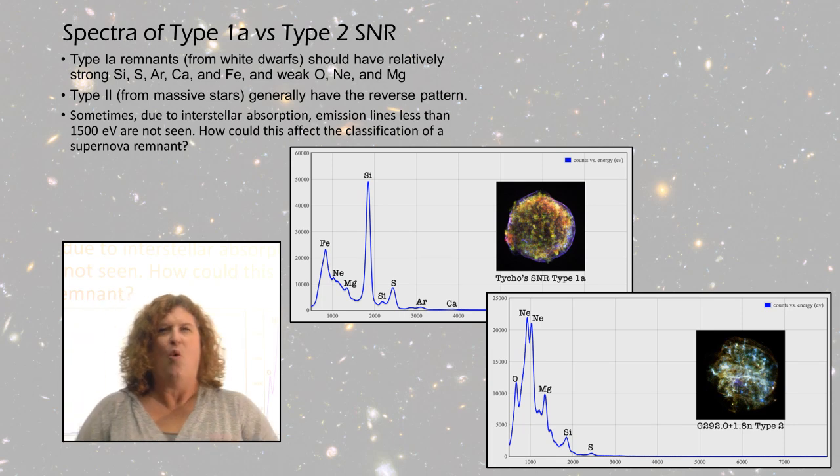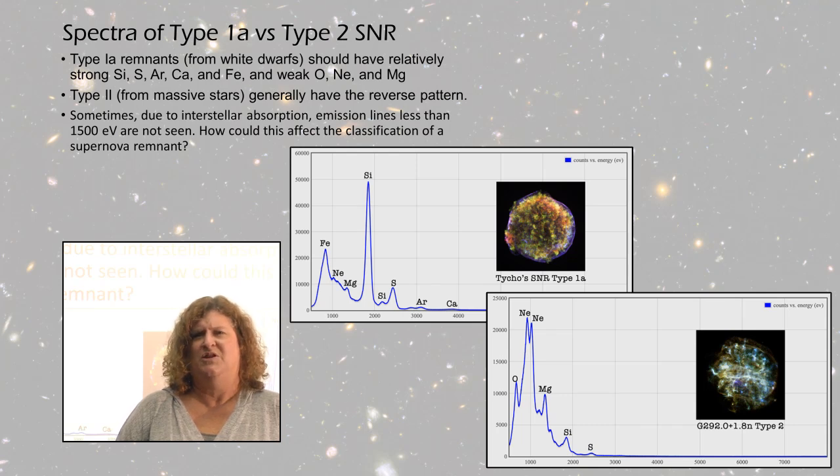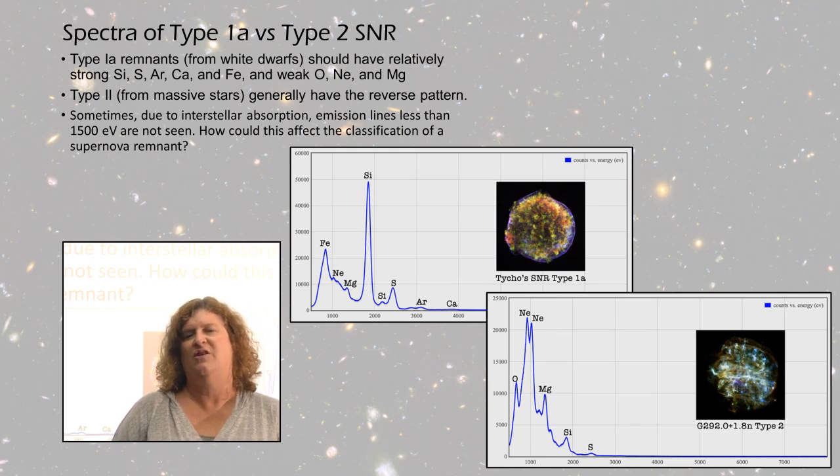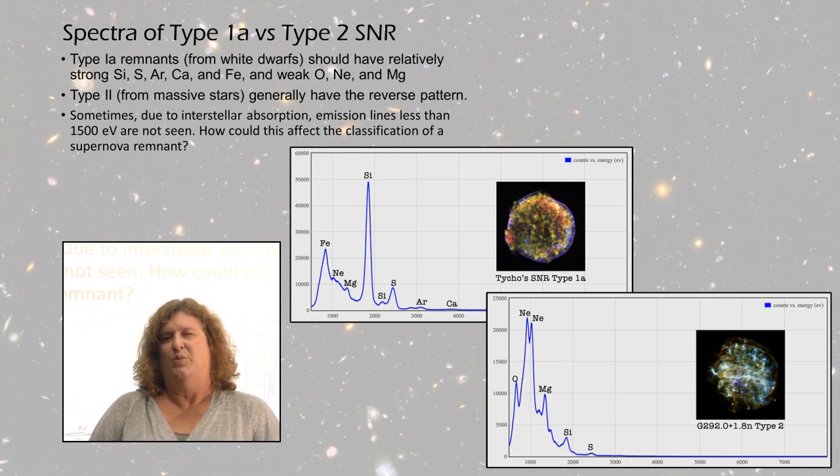One issue is that sometimes due to interstellar absorption, the photons that are 1500 electron volts or less can sometimes be absorbed before they're recorded and they might be missing from the spectrum. Just because they aren't there doesn't mean that it's not a Type 2 supernova remnant.